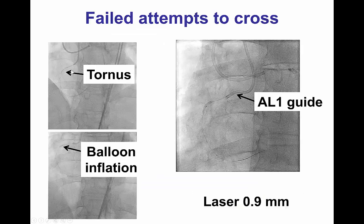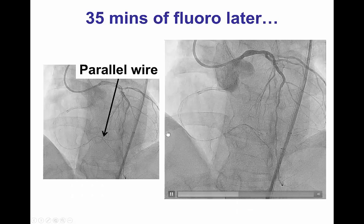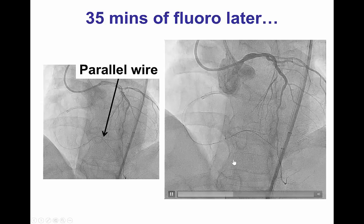In this particular case, we tried a Tornus catheter that did not cross. We changed to an 8-French Amplatz guide catheter, which also did not allow the balloon to cross. We performed grenadoplasty, inflating and breaking the balloon in the proximal vessel, without success. We finally did laser, and after doing so, we were able to advance the microcatheter all the way to the distal right coronary artery.